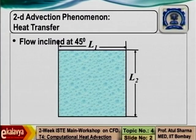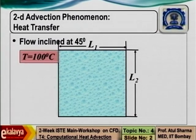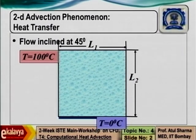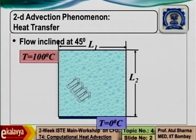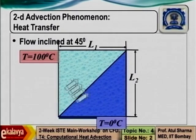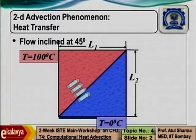If you take a two-dimensional advection phenomena, then let us consider a square domain where the flow is inclined at an angle of 45 degrees. The left wall of the domain is at 100 degree centigrade and the bottom wall is at 0 degree centigrade. The exact solution for pure advection in this case is such that below the diagonal you have 0 degree centigrade and above the diagonal you have 100 degree centigrade, with a sharp change in temperature across the diagonal.